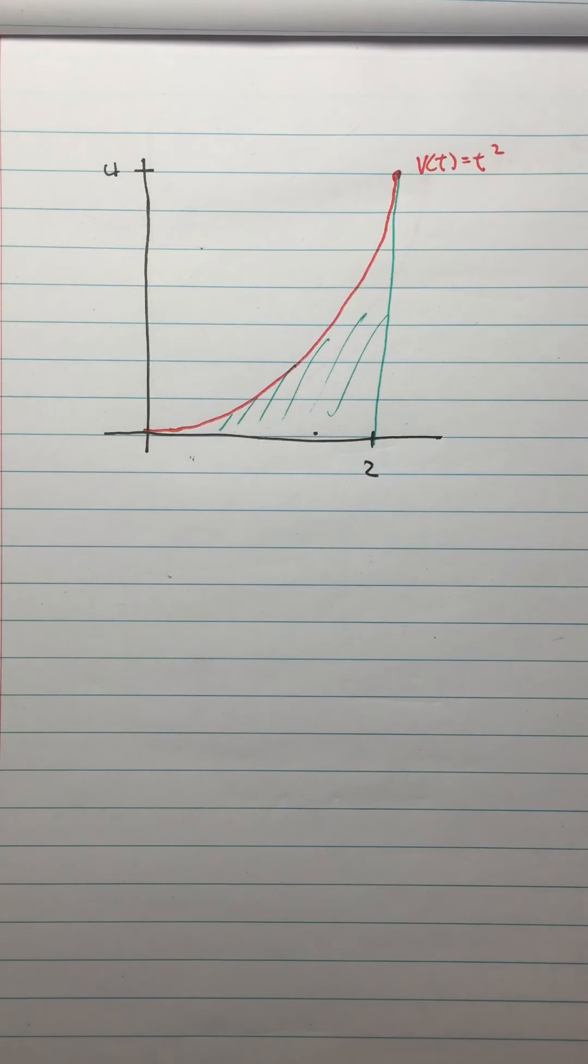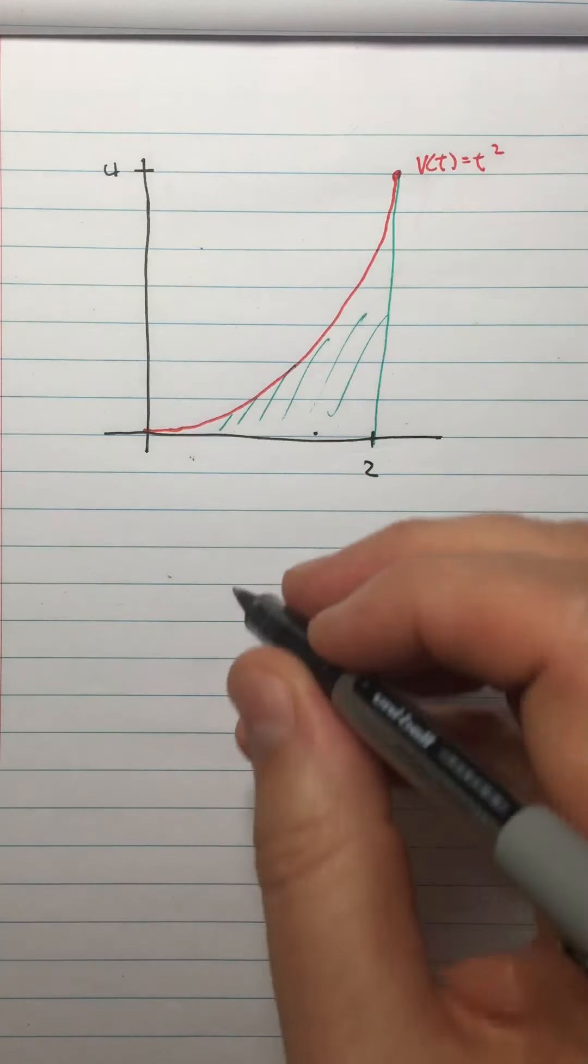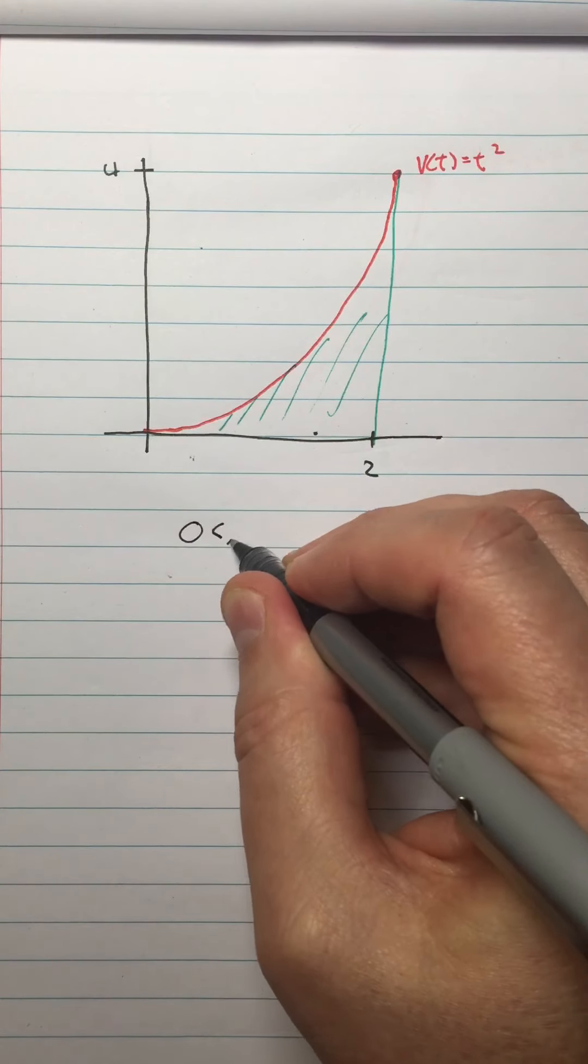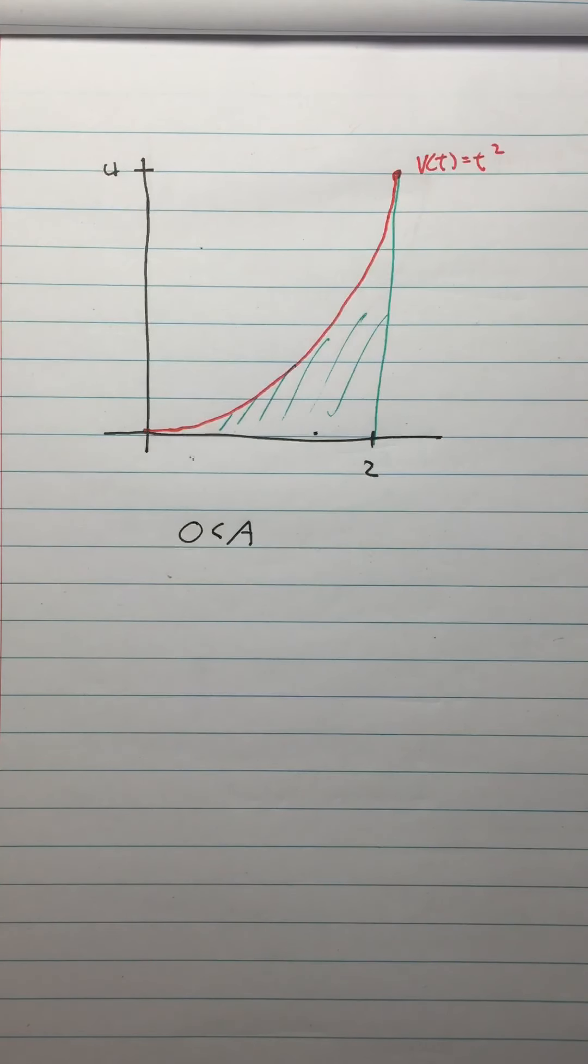So what can we say about this area? The first thing we can say is the area is positive. So zero is less than A. Now here's something else we can say about it, here's something we can observe.